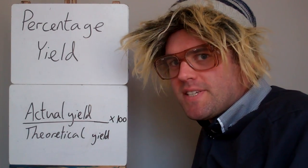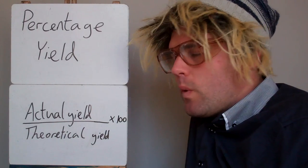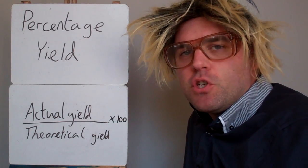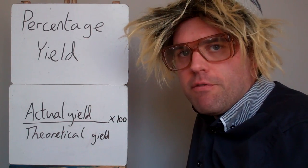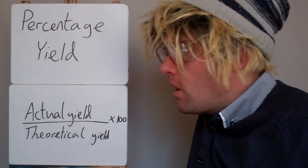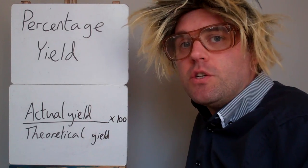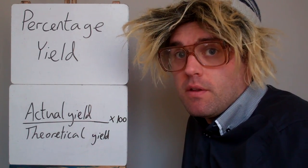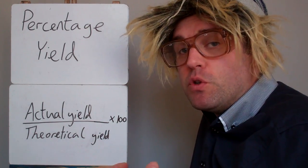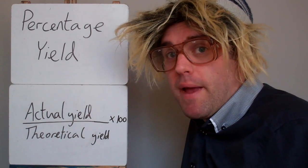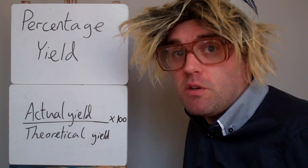Here we're looking at percentage yield. Percentage yield is a way to look at how efficient a reaction is at producing what you need from your starting materials. You can't work it out from just looking at an equation — there has to be a reaction done. Once we've done that reaction, we see if we've produced as much product as we expect we should have, based on how much starting materials we had in the beginning.